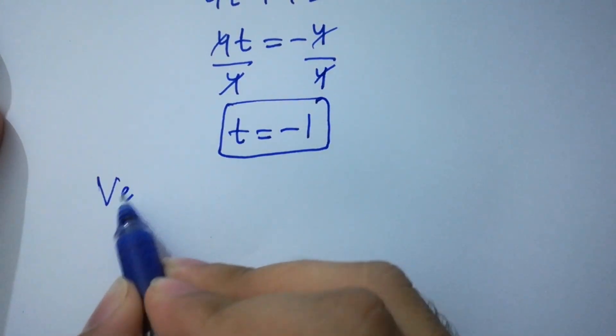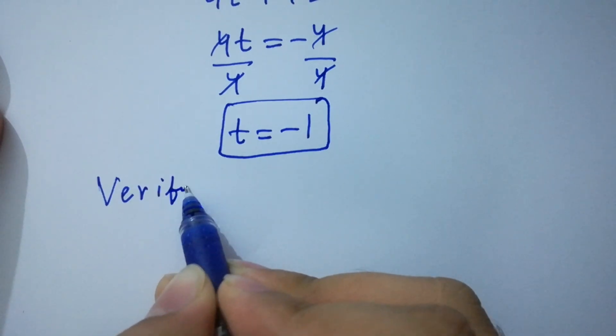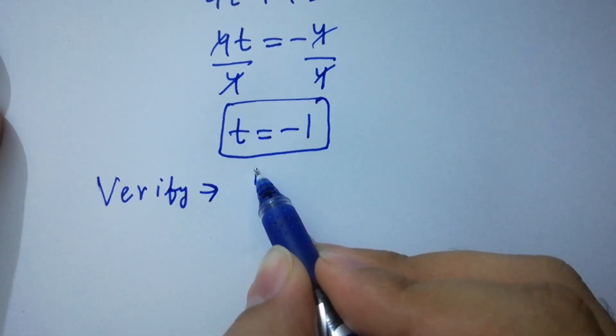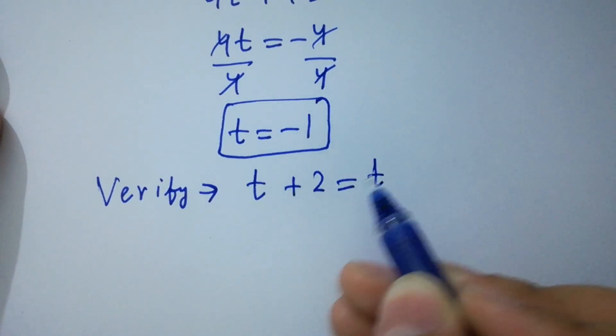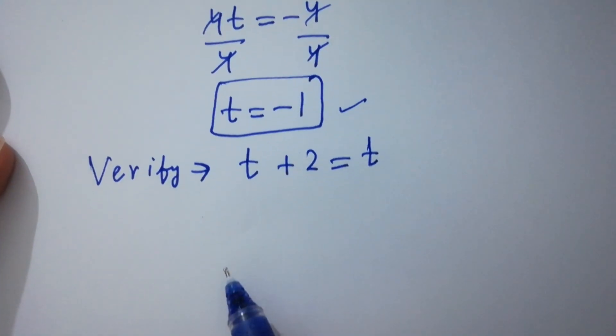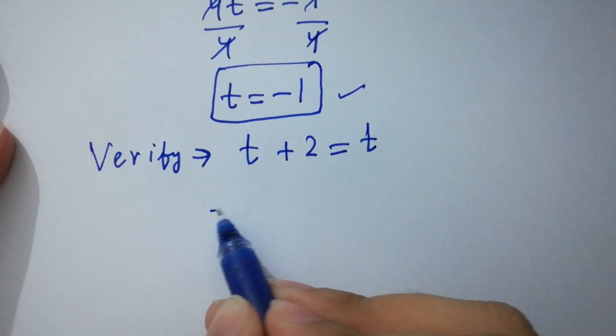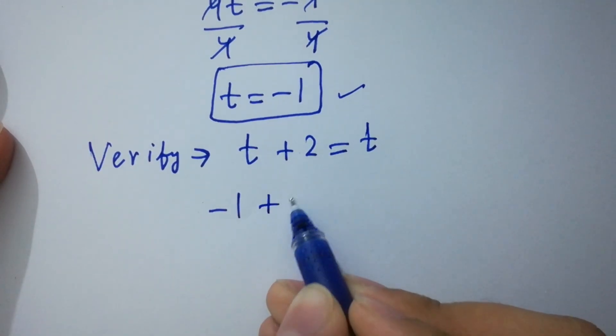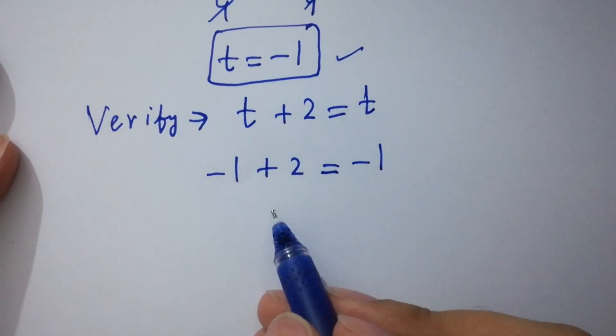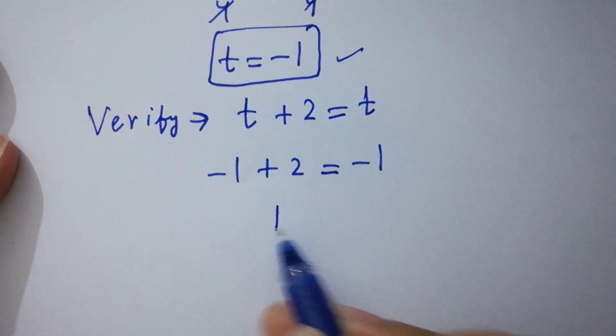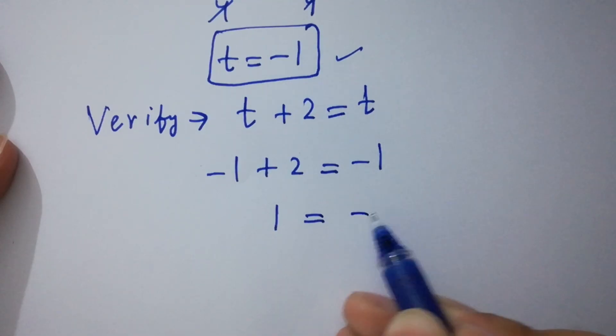Now, I am going to verify t plus 2 equal to t. Put the value of t which is minus 1, minus 1 plus 2 equal to minus 1.